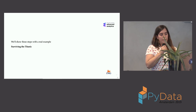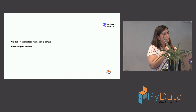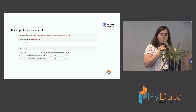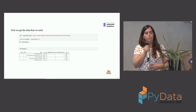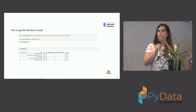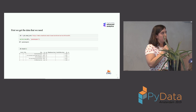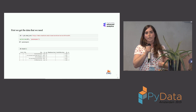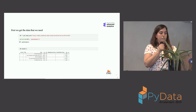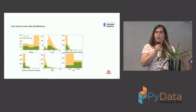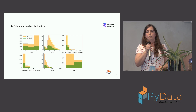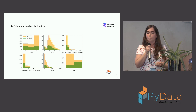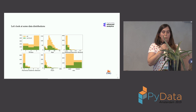Now let's look at a real dataset. Most of you probably know it — it's the Titanic survival dataset. In this dataset you have all kinds of information about passengers: the fare they paid, what class they were in (first, second or third), whether they were male or female, their age — and we try to predict the probability of survival.